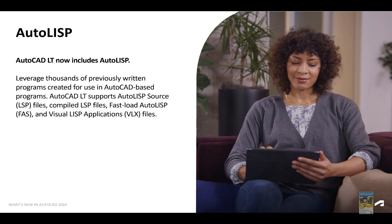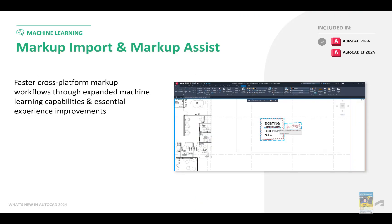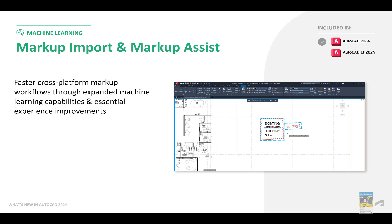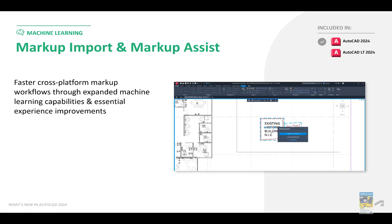AutoLISP is now included in AutoCAD LT, so you can start using different source files such as AutoLISP source files, compiled LSP files, fast load AutoLISP files, and Visual LISP application files. Markup Import Assist has also been improved quite a bit to allow for working with markups that you bring into your file — it recognizes text, allows for text replacement, and understands some basic handwritten text that refers back to commands. This applies to the full version of AutoCAD 2024, not the LT version.